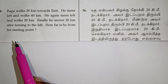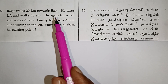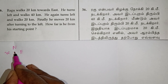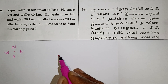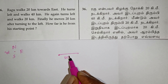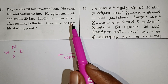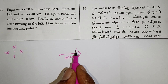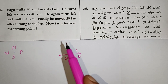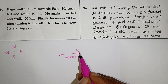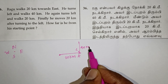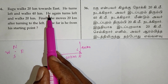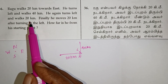The second question is: Raghu walks 20km towards east. North, south, east, west — starting point. East direction, 20km walk. First he turns left; if you want to walk you will see the right side or left side. He turns left, walks 40km. Then he turns left hand and walks 20km.